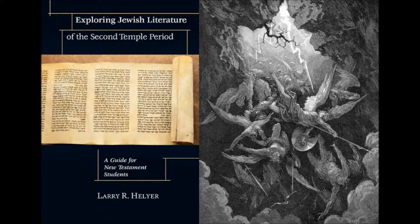It includes the Old Testament Apocrypha. There are New Testament Apocrypha that don't count in this because that's later than 100 AD. So Old Testament Apocrypha — books like Tobit, 1st and 2nd Maccabees, that kind of thing, just the Apocrypha.